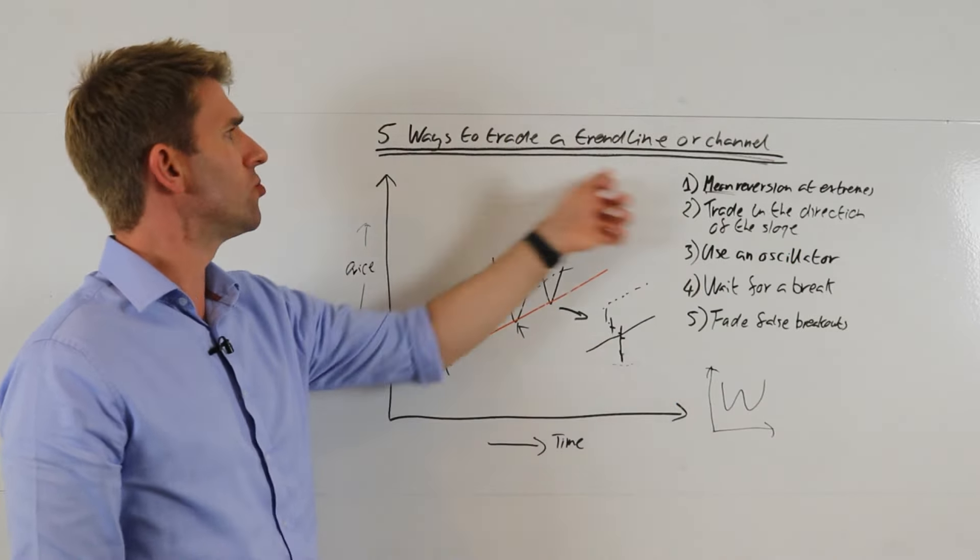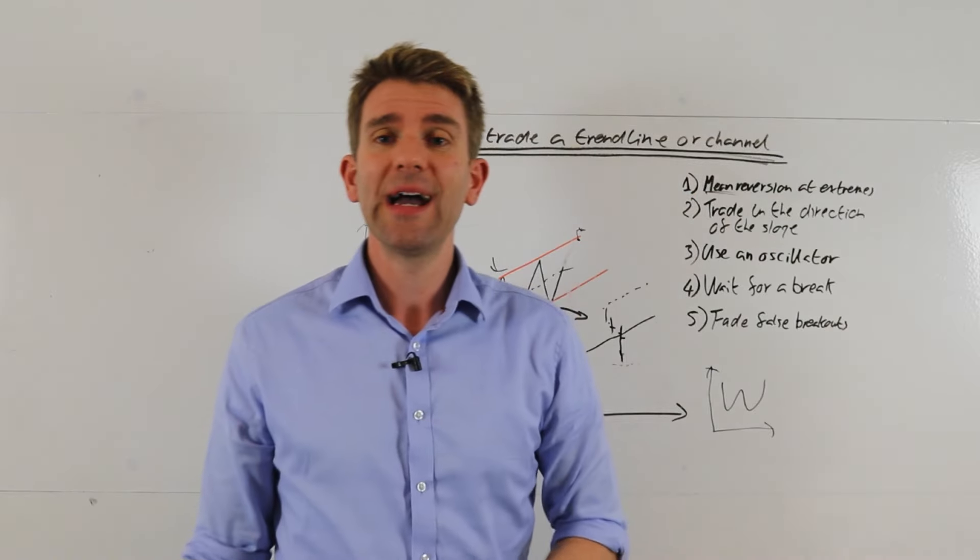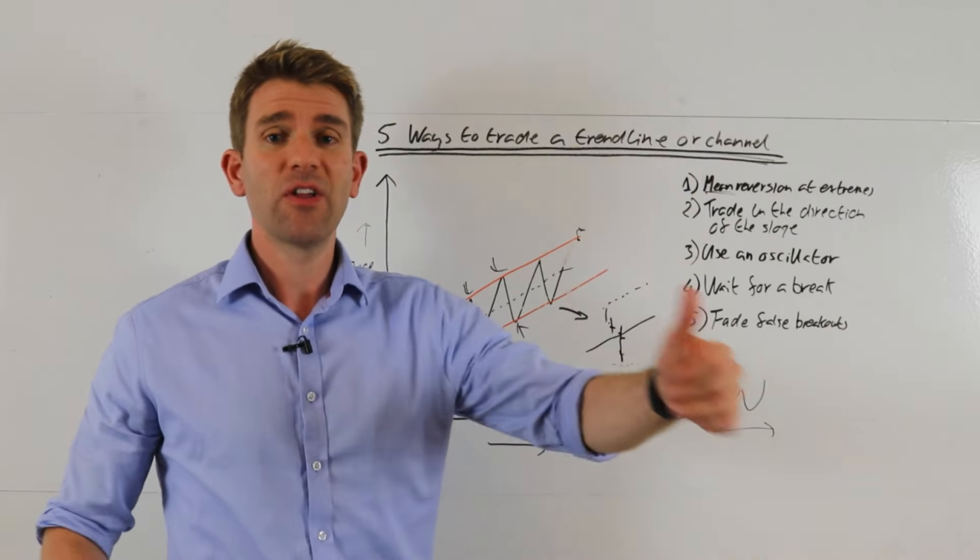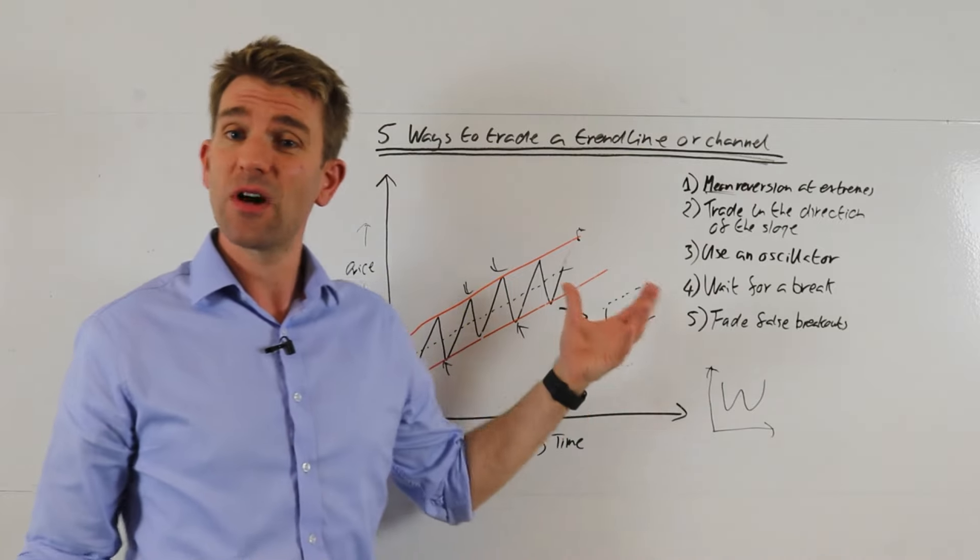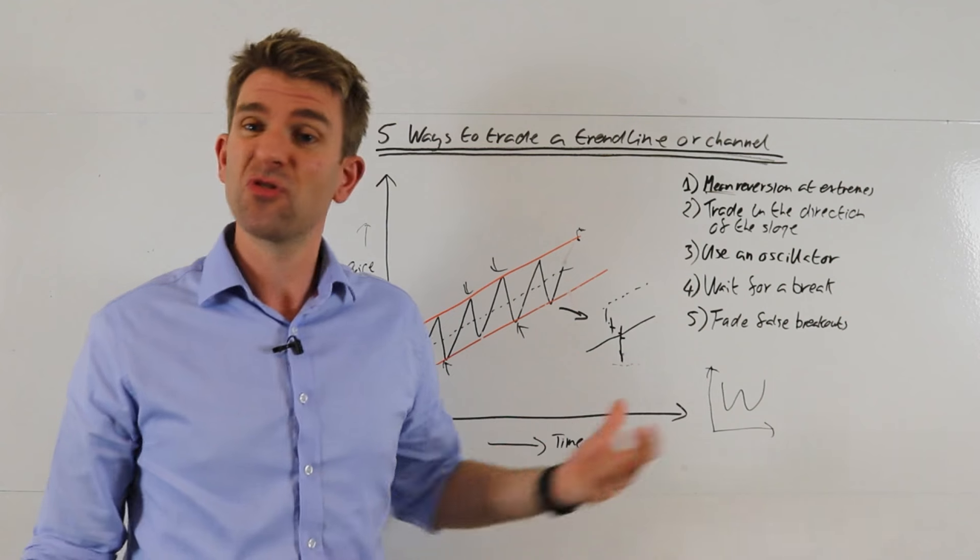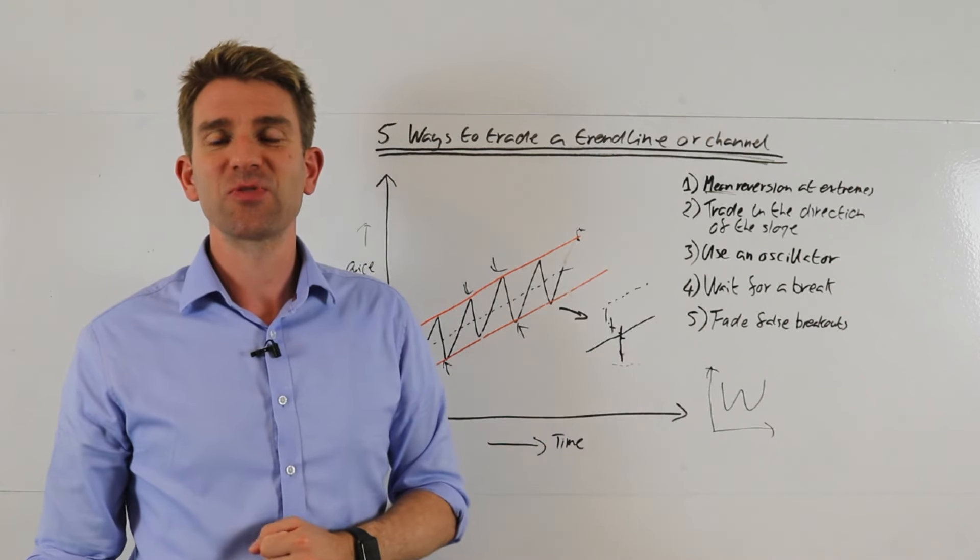So those are five ways to trade a trend line or a channel. If you find this stuff useful, thumb up is much appreciated. Comments in the comment section below, always interested to hear your opinion on this kind of stuff. Do you trade trend lines? You trade channels? Not interested? Take care, see you next one, bye.